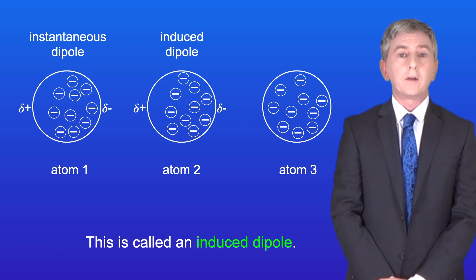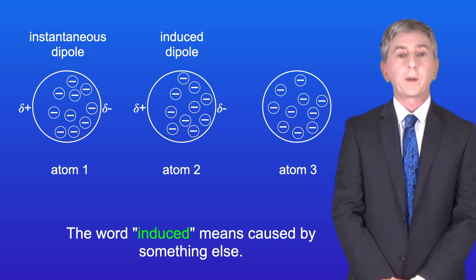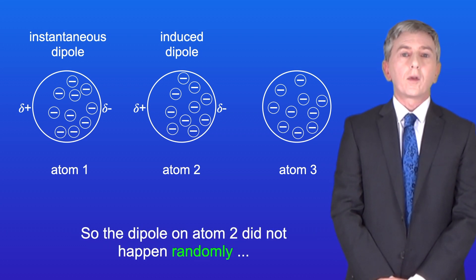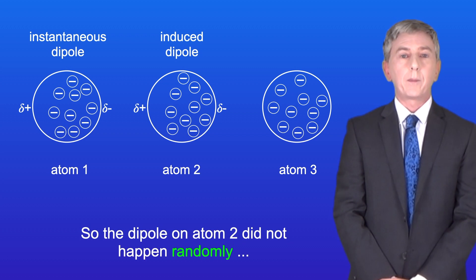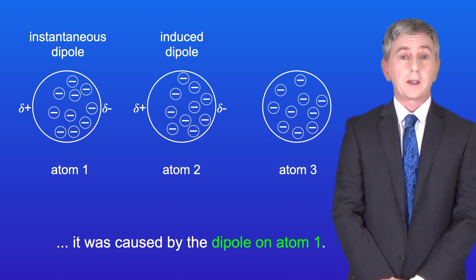This is called an induced dipole, and the word induced means caused by something else. So the dipole in atom two did not happen randomly. It was caused by the dipole in atom one.